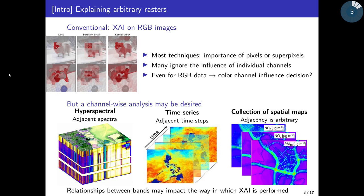Typical examples of raster XAI are applied to RGB images, where entire pixels are assigned importance, but for atmospheric CNNs we're probably interested in the influence within specific channels — for example, to determine how important the wind is compared to temperature, atmospheric pressure, etc.